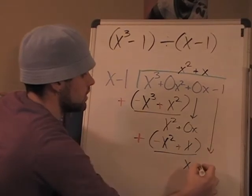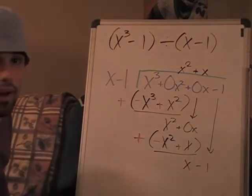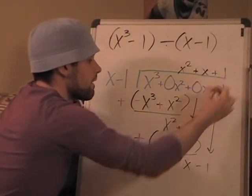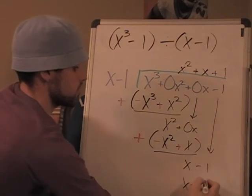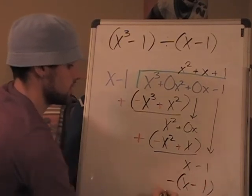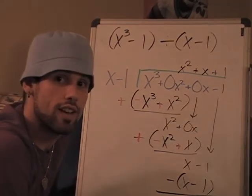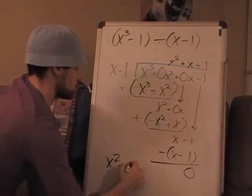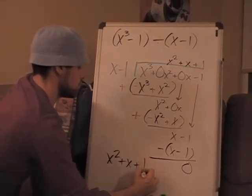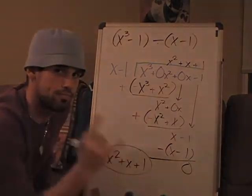Bring down negative one. How do you make x look like x? You multiply it by one. One times x minus one is x minus one, and it's magic - it goes away. Zero at the end, no remainder. Fantastic. All you do is write down your answer: x² plus x plus one. Booyah grandma, no more.